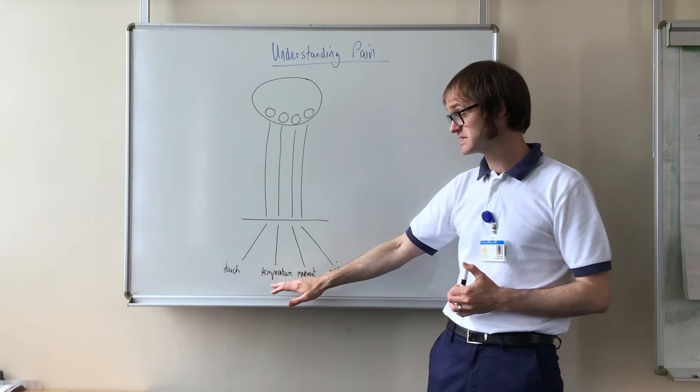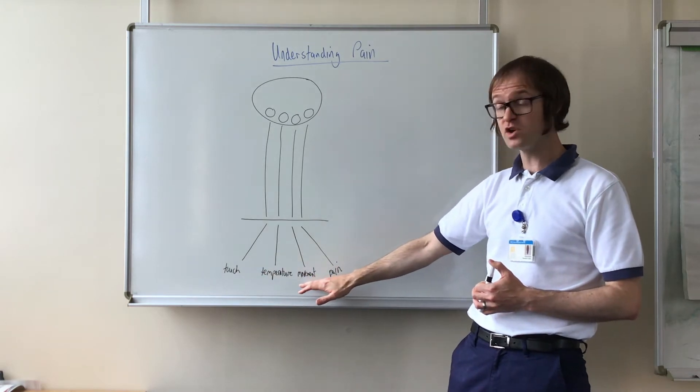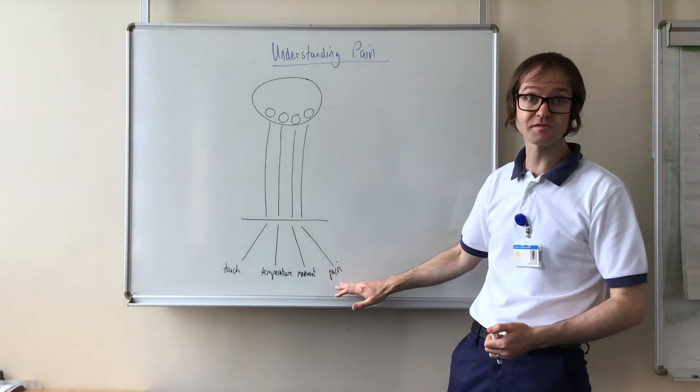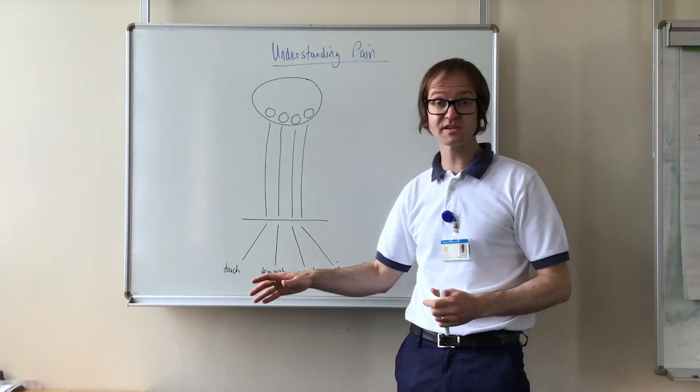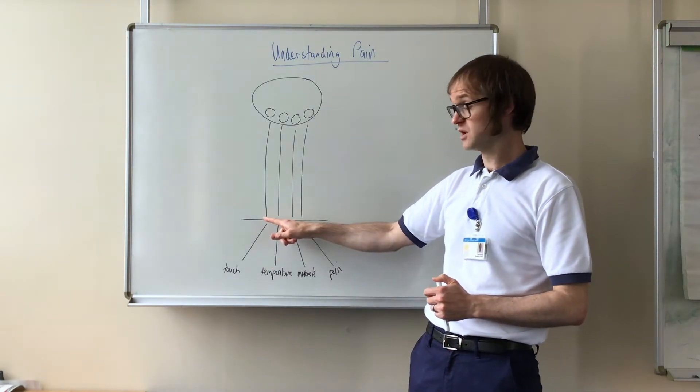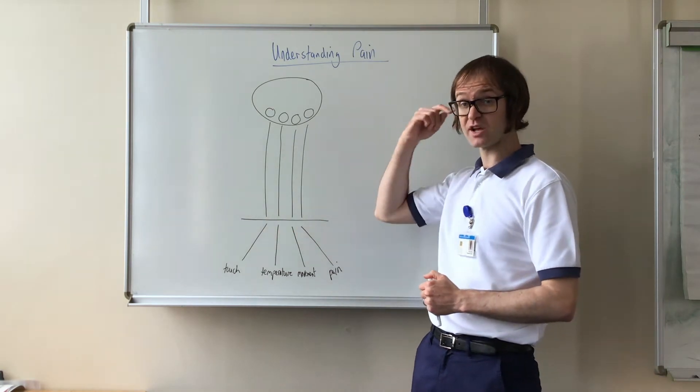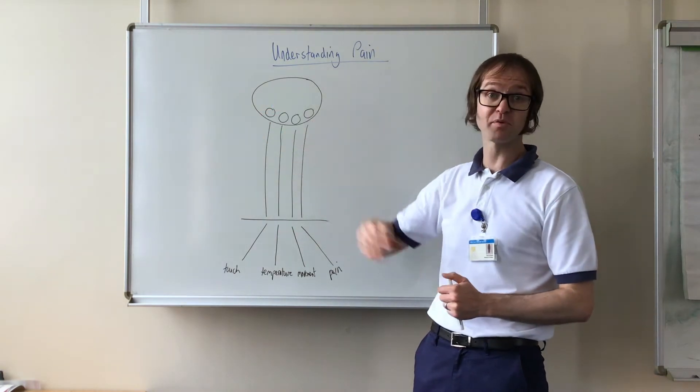So I'll put some examples of these here. We've got touch nerves, temperature nerves, movement nerves, and of course pain nerves. And what happens is when those nerves are stimulated, they send a message up to an area in the spinal cord where it's then transmitted up to an area of the brain.